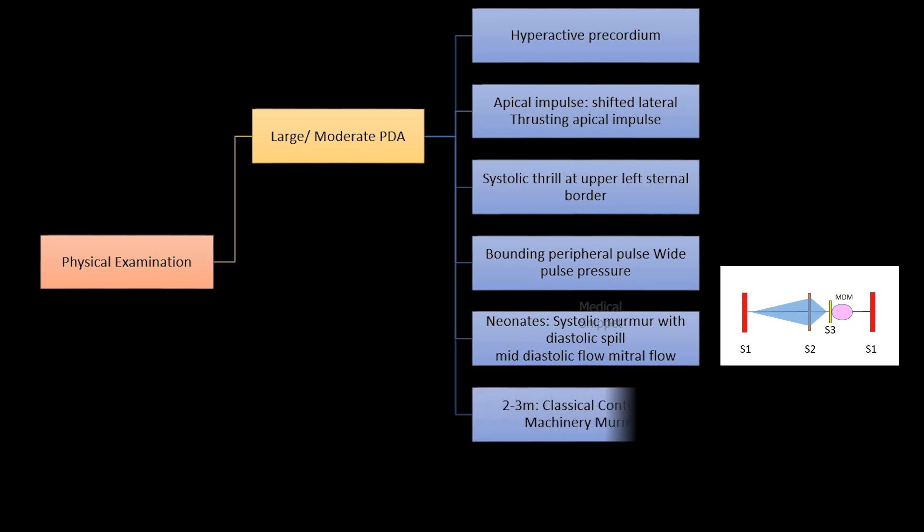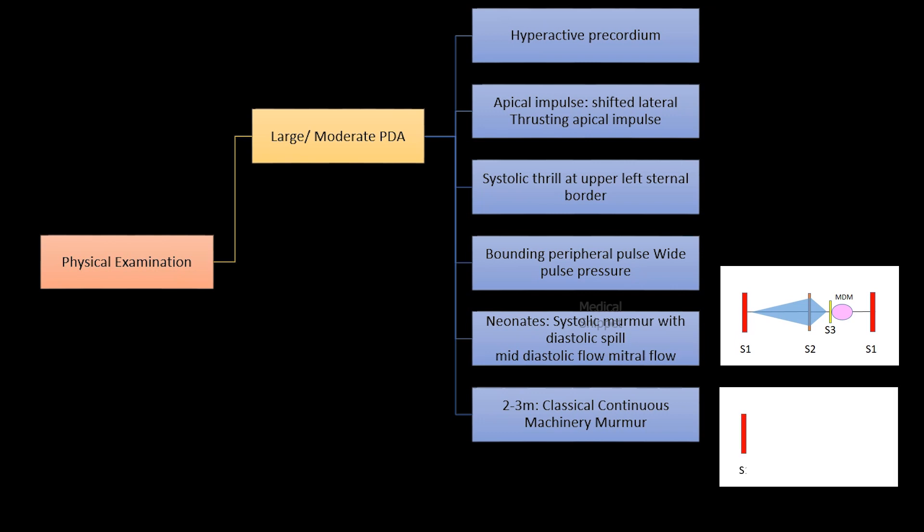By 2-3 months of age, when the pulmonary vascular resistance decreases significantly, one can hear the classical continuous machinery murmur of PDA at the left upper sternal border, as described by Gibson.